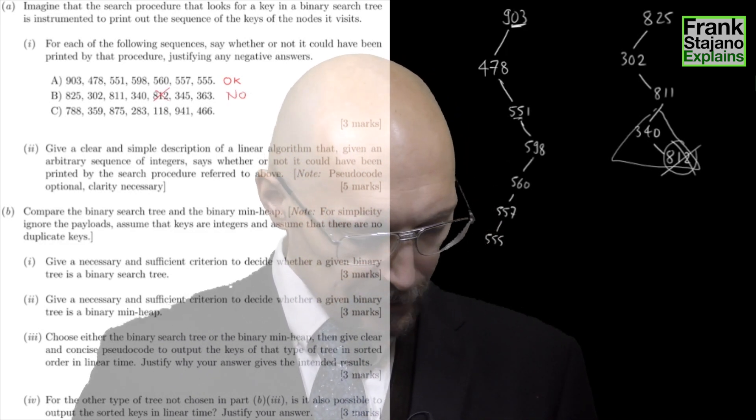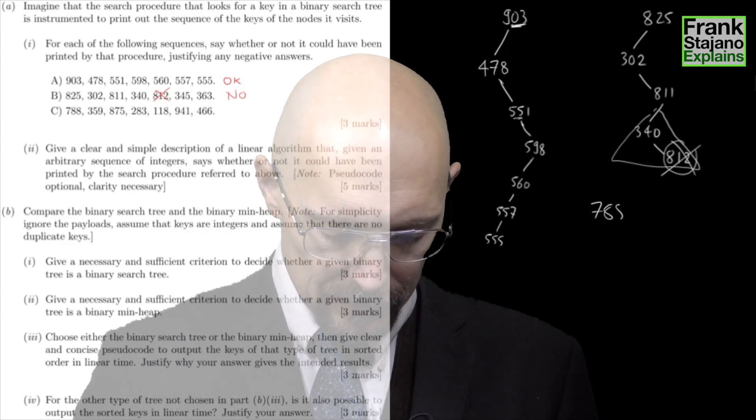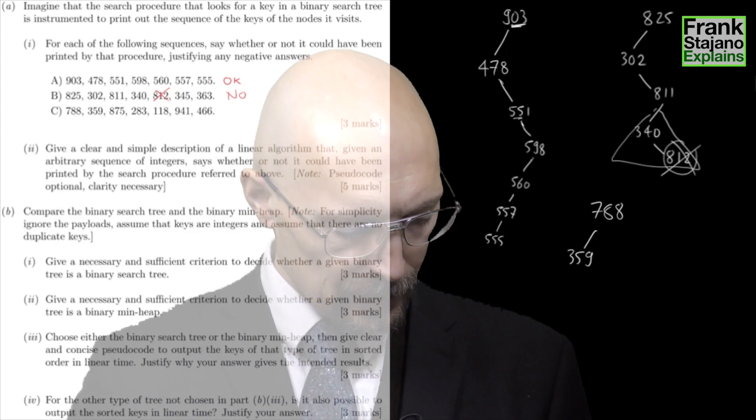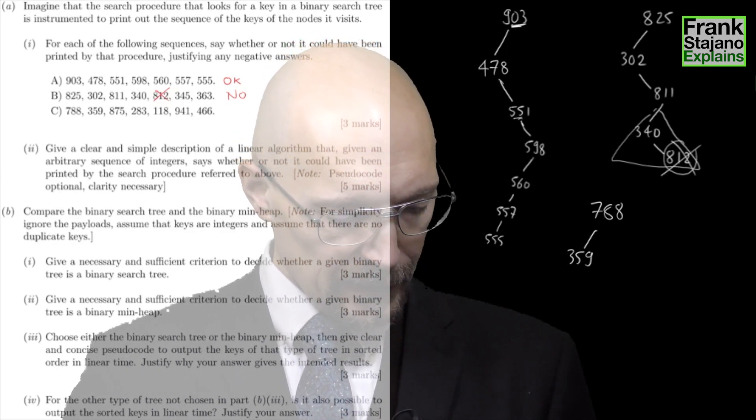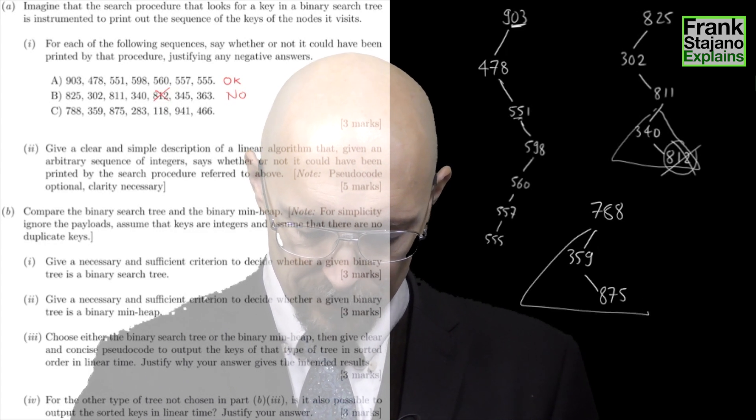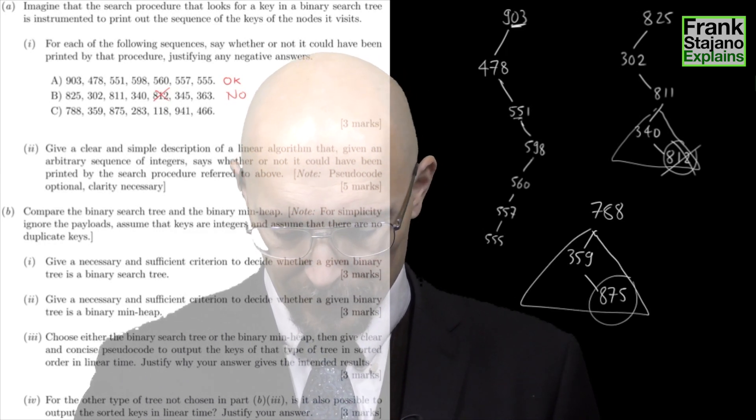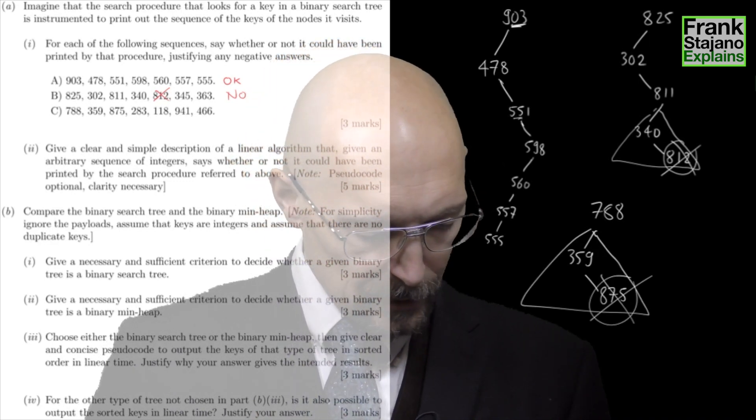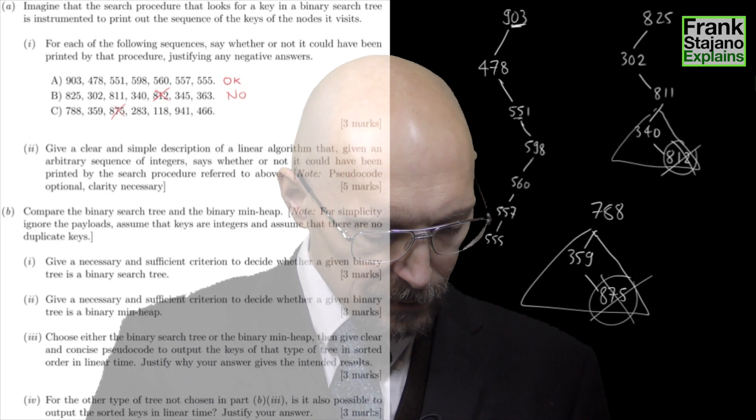The next one is 788. I go into 359, then into 875. 875 is supposed to be in the left subtree of 788 but is bigger than 788 so I can't do that. It's the same situation as before. And so this one is also not allowed.